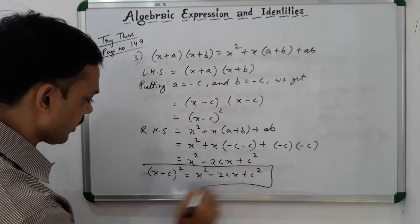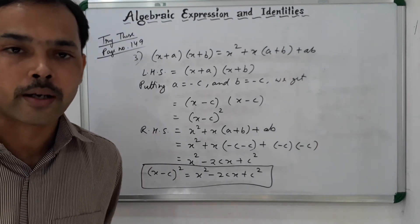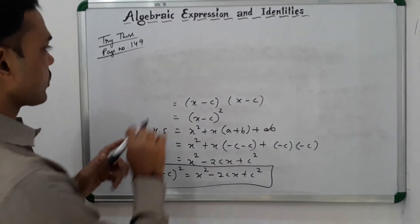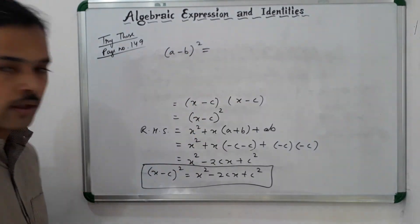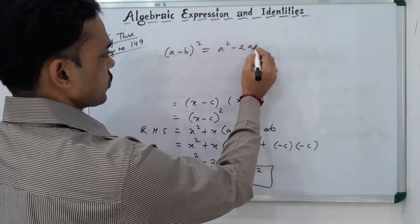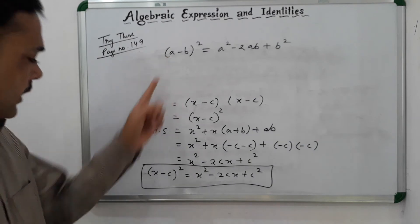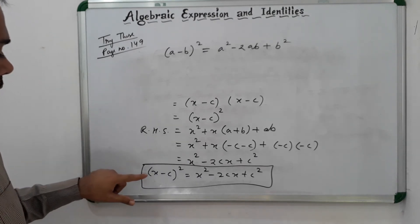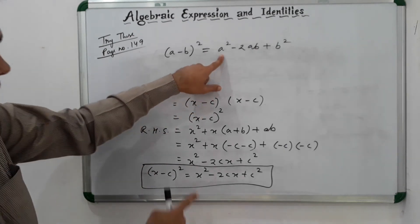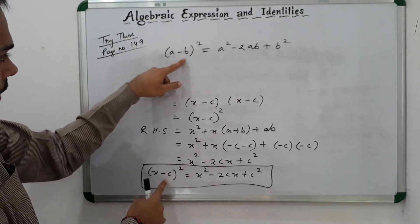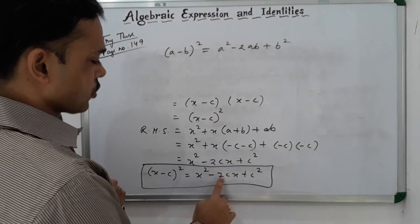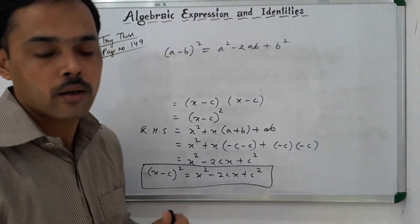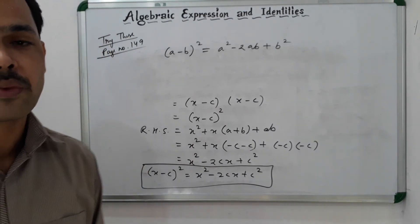The question also asks: is it related to identity 2? Identity 2 is (a − b)² = a² − 2ab + b². If we substitute a by x and b by c, then we get x² − 2cx + c², which is exactly what we obtained. So yes, it is obviously related to identity 2.